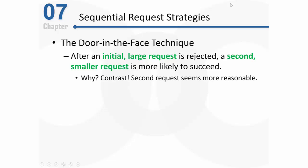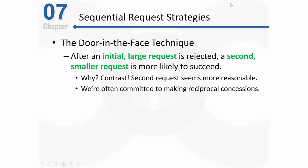Why would that work? To some extent, there's a contrast effect — that second request for $50 seems so much more reasonable compared to $500. And due to the norm of reciprocity, we're often committed to making reciprocal concessions. I made a concession by coming down from $500 to $50, so now you feel some obligation to make a concession as well — shifting from no to yes. You feel a little pressure to do so due to that norm of reciprocity, and that's why this technique is successful.